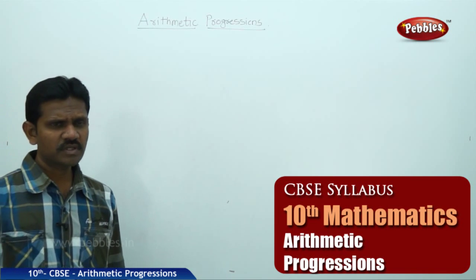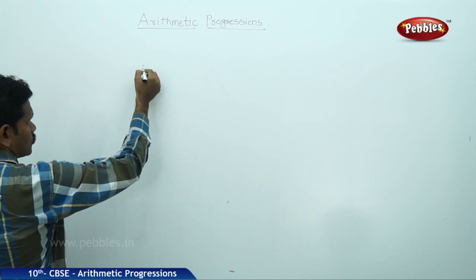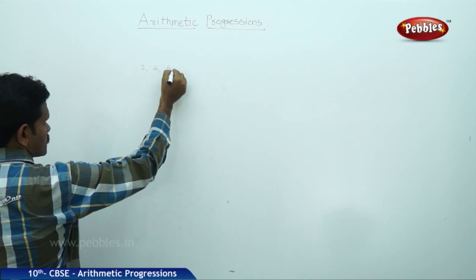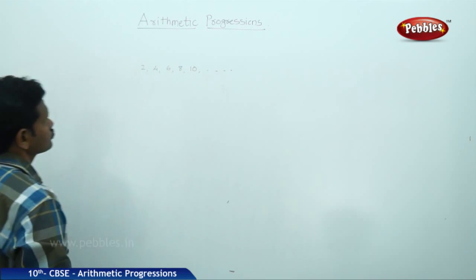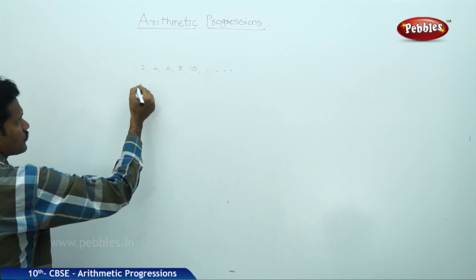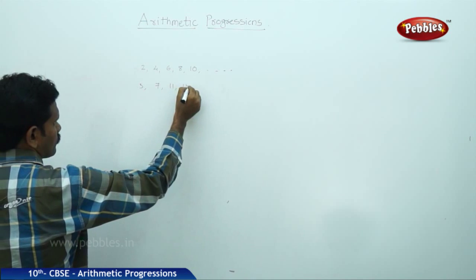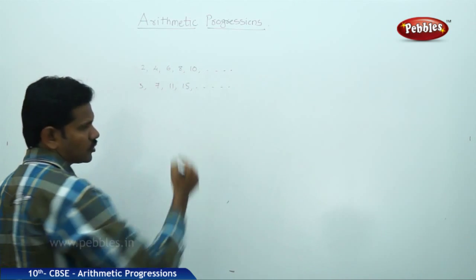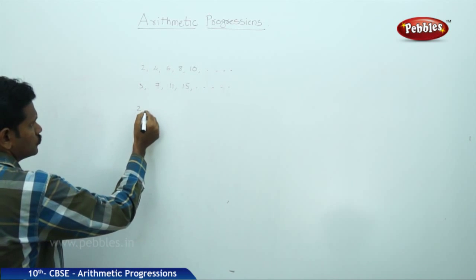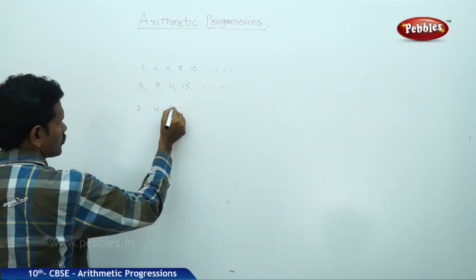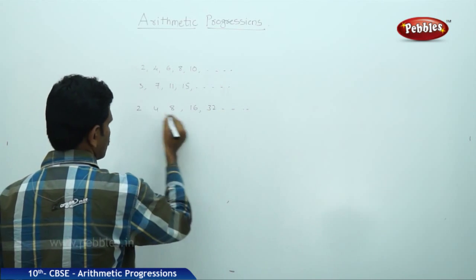A progression is a sequence of numbers following a pattern. For example: 2, 4, 6, 8, 10 and so on. Another example: 3, 7, 11, 15 and so on. And a third example: 2, 4, 8, 16, 32 and so on.